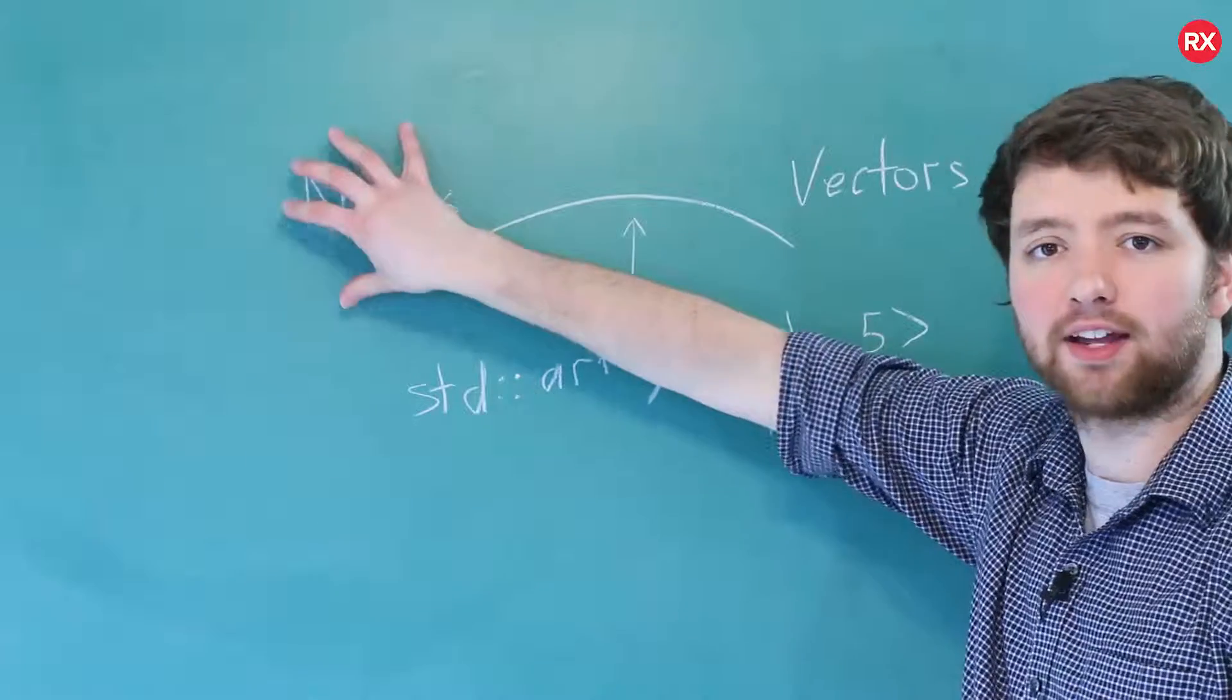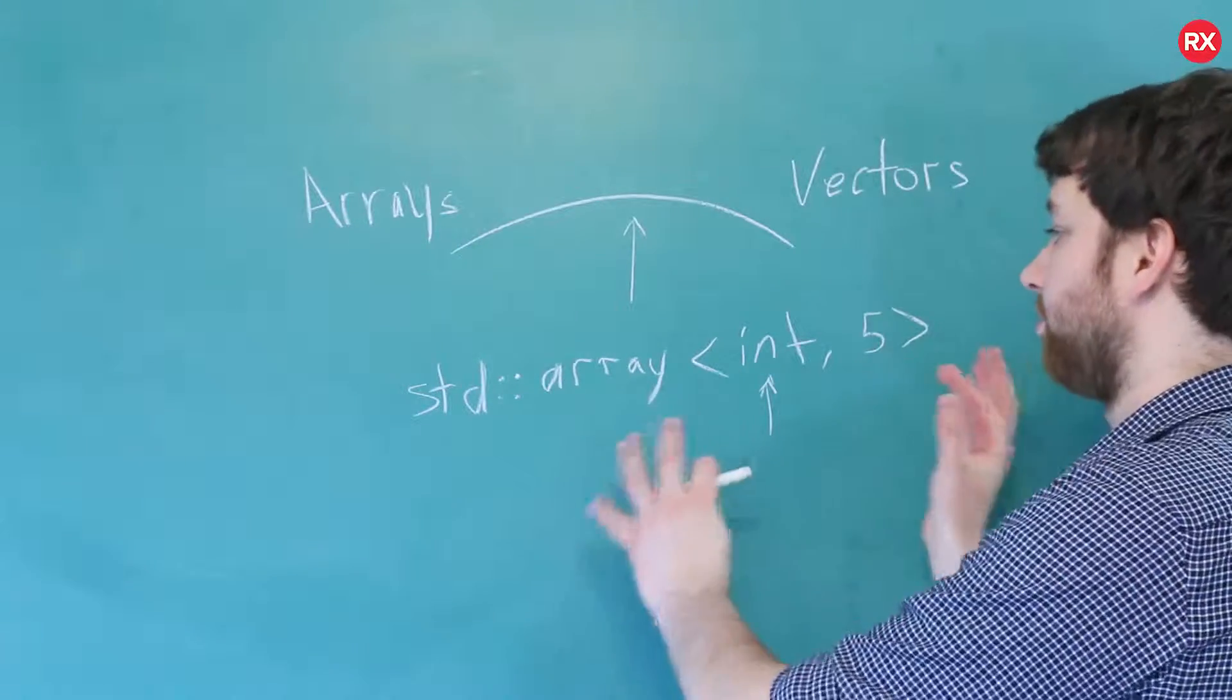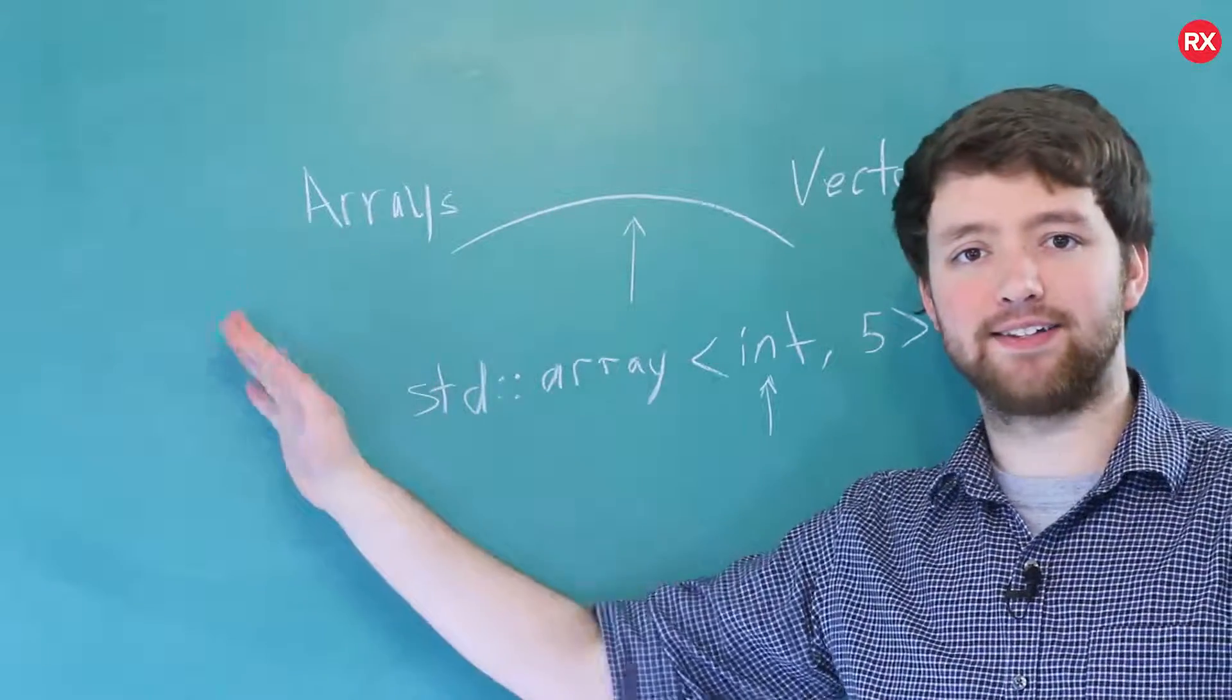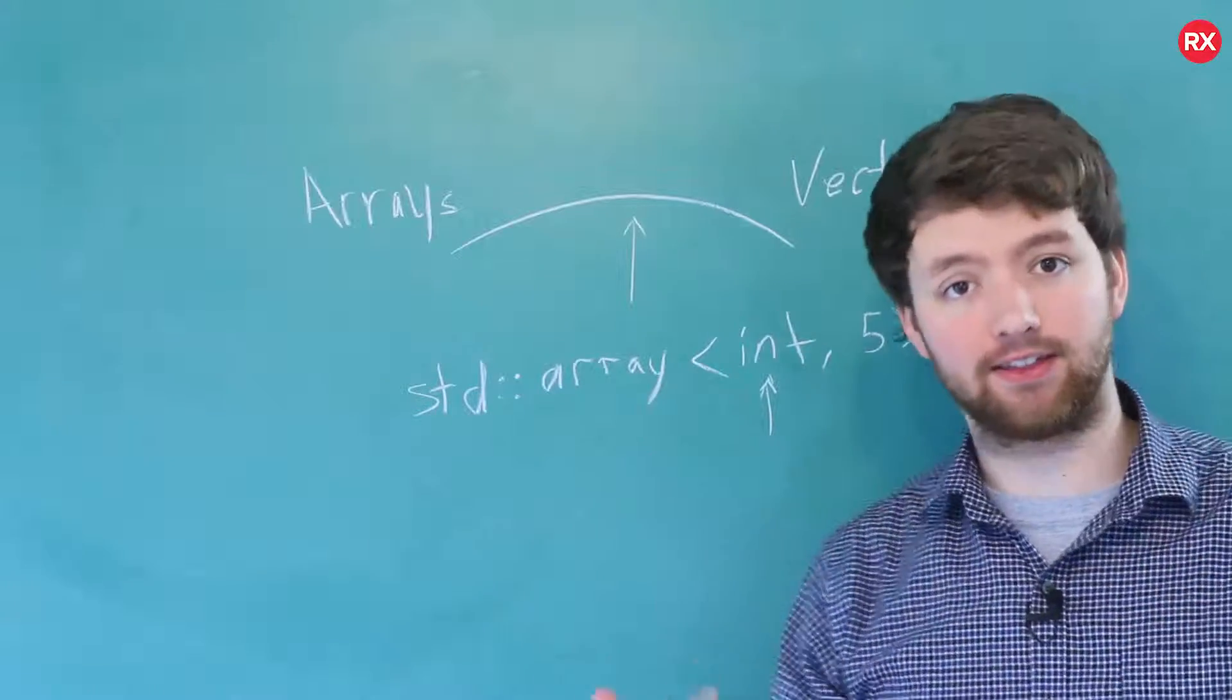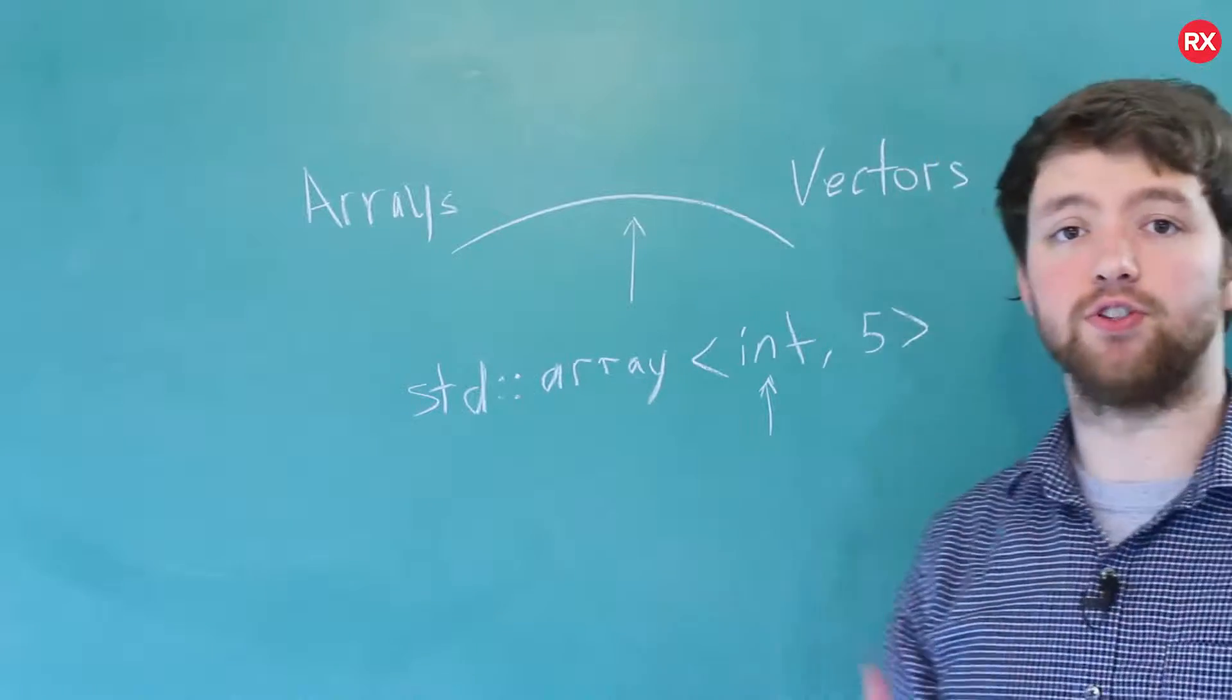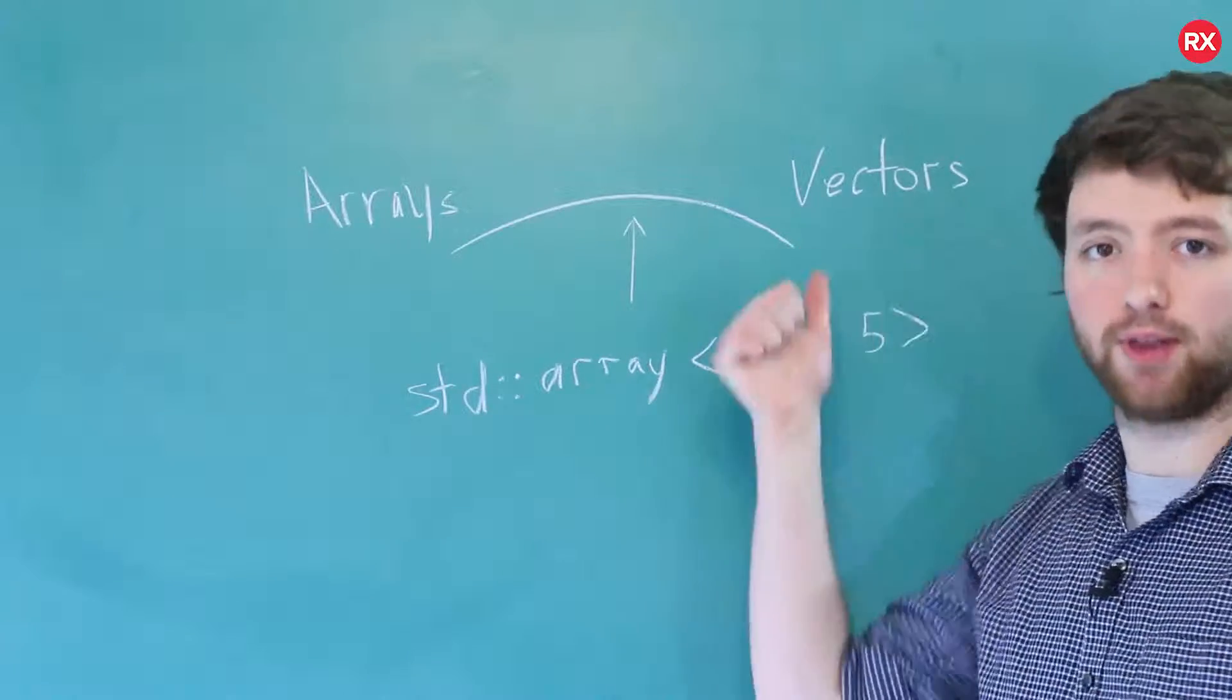So let's look at some of the differences between arrays and vectors and where the templatized arrays fit in. Well, arrays are statically sized, vectors are dynamically sized. The templatized array is on that side, it's statically sized. Arrays when passed to functions do not remember their length. Vectors when passed to functions do remember their length. Templatized arrays are on this side, they remember their length.